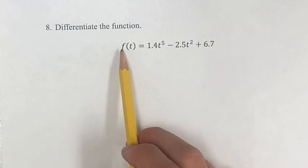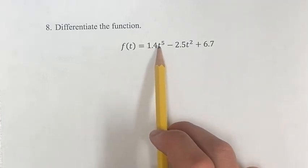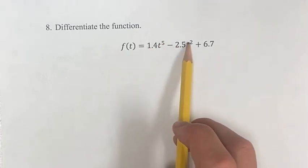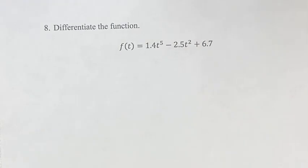This problem, we're asked to differentiate the function f of t equals 1.4 times t to the fifth minus 2.5 t squared plus 6.7. So we have a polynomial, so we go term by term and find the derivative of each one.